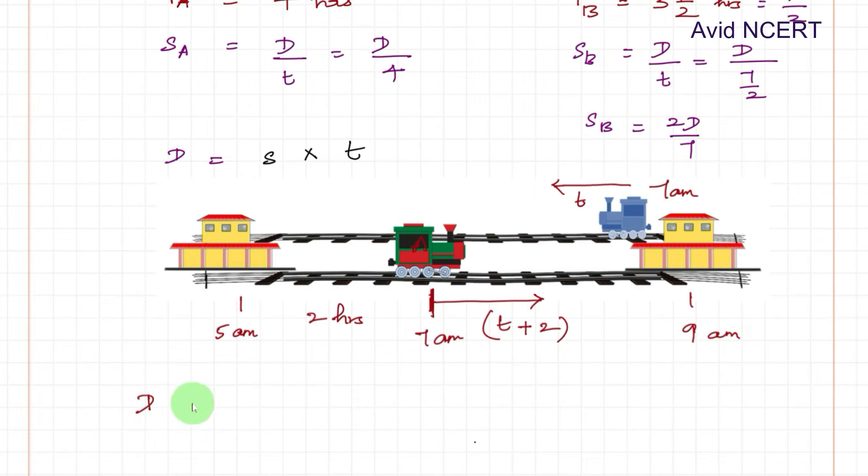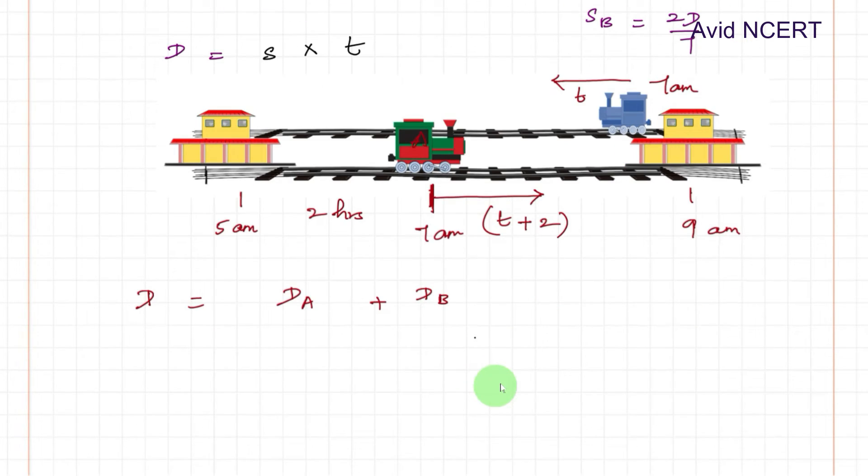Therefore the total distance equals distance traveled by train A plus distance traveled by train B. So distance traveled by train A equals speed of train A times time taken, which is T plus 2, plus speed of train B times time taken by train B, which is T hours.